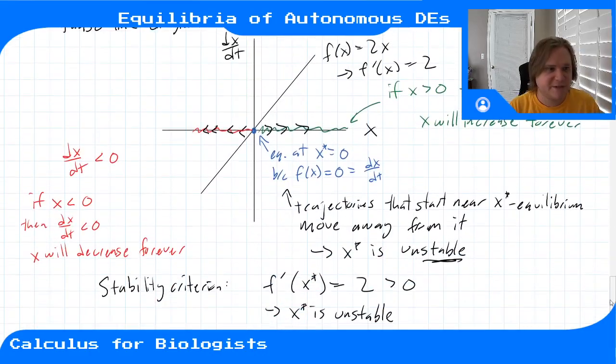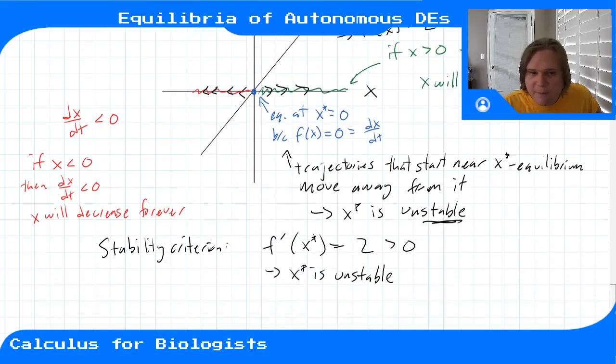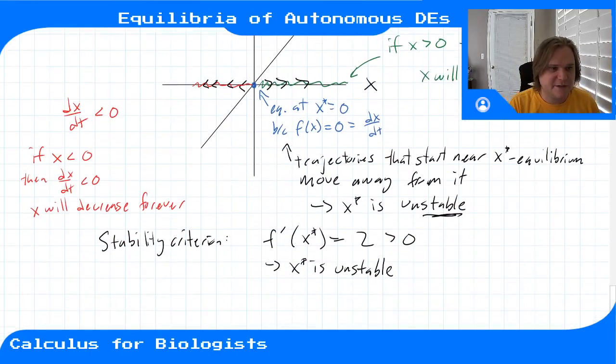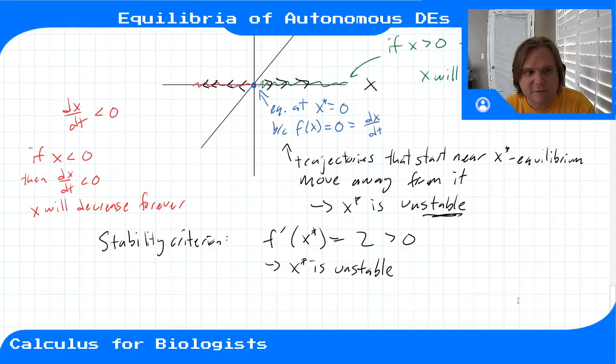That's the idea of the phase line diagram and the stability criterion — they give you exactly the same information. For these simple systems it's kind of overkill, but for more complicated systems, as I'll show in another video, this will be a very useful tool.